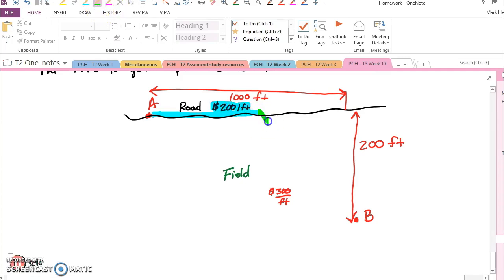And then we turn around and we go diagonal to point B at some point that we don't know and that costs us $300 a foot. So because we're trying to find the best way to do this,